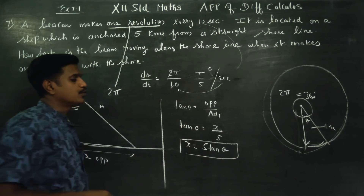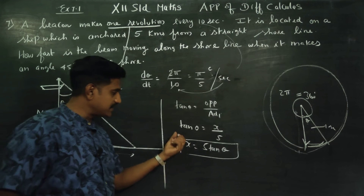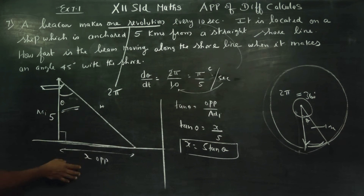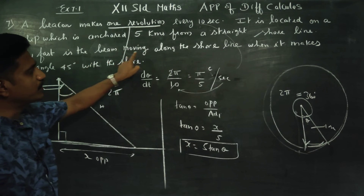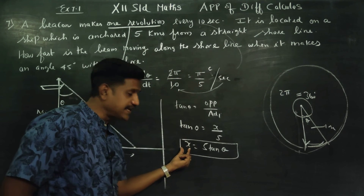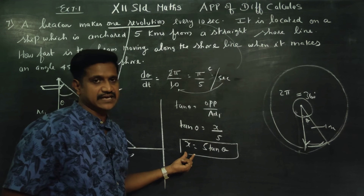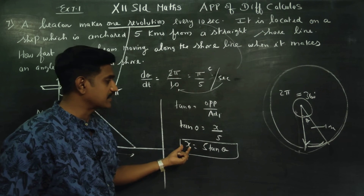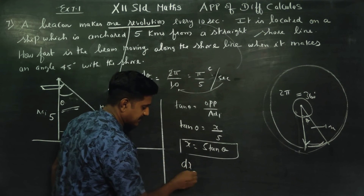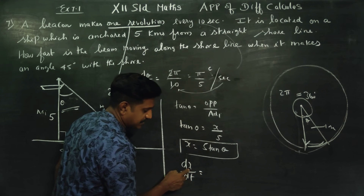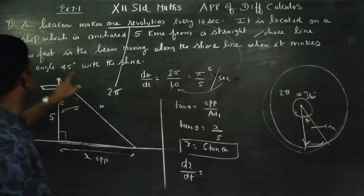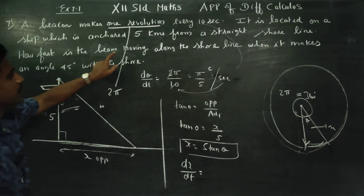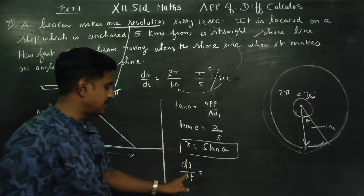We now have a unique equation relating x and θ: x = 5·tan θ. We want to find dx/dt — the rate of change of x with respect to time — which represents how fast the beam is moving along the shoreline.